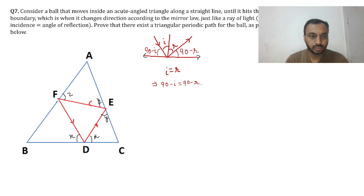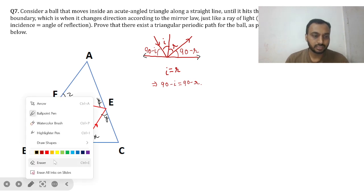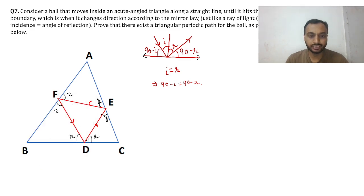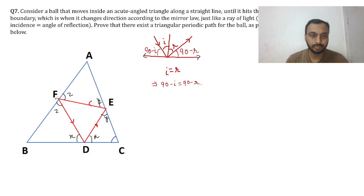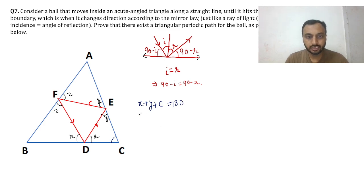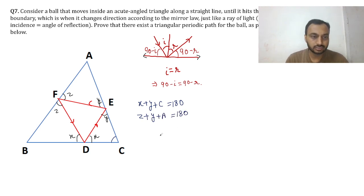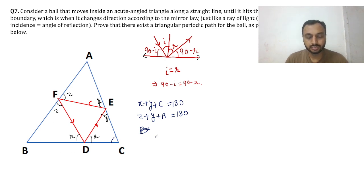We have angle pairs labeled X, Y, and Z at the three bounce points D, E, F. Applying the angle sum property in triangles CDE, AFE, and BDF respectively, we get: X plus Y plus C equals 180; Z plus Y plus A equals 180; and X plus Z plus B equals 180. Let's call these equations 1, 2, and 3.